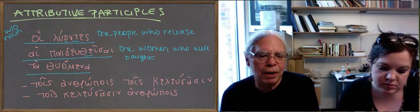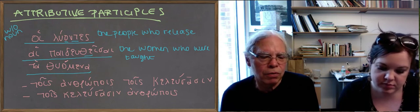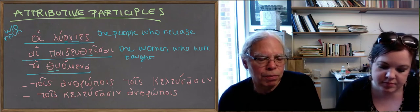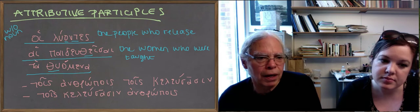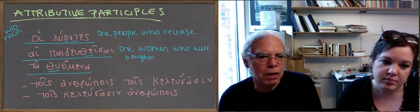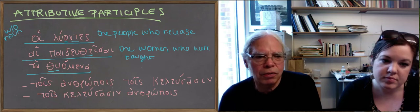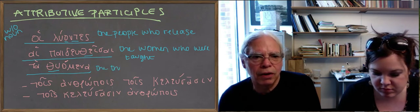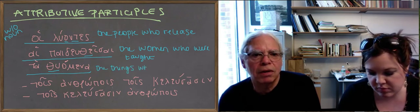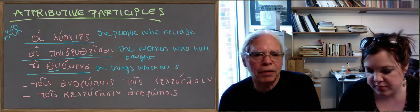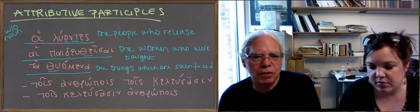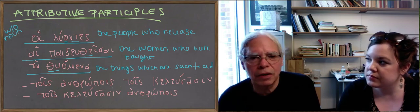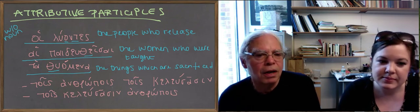Can you do the next one? *Ta thuomena* — that's your neuter nominative or accusative article, and the participle is built on *thu-*, the present stem of the verb *thuo*. You've got your thematic vowel -o- and then *-mena*. The *-mena* ending can be either middle or passive. Let's do it as passive — that's going to mean 'the things which are sacrificed.' Do it as a relative clause: don't say 'the things being sacrificed,' say 'the things which are sacrificed.' That's much more idiomatic in English and much more like the way these things work in Greek.